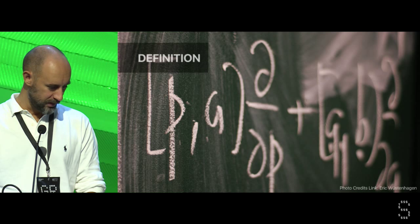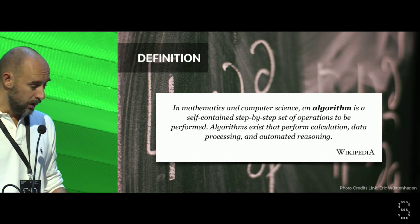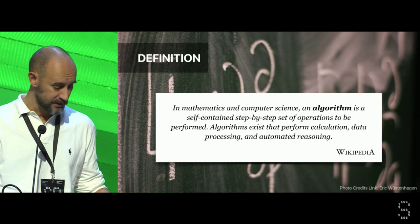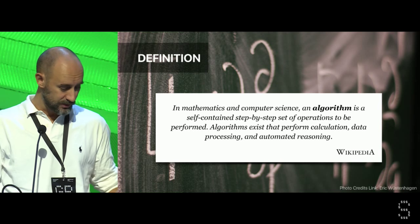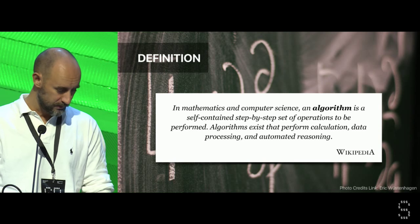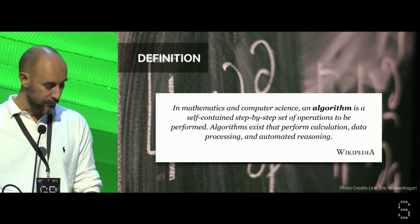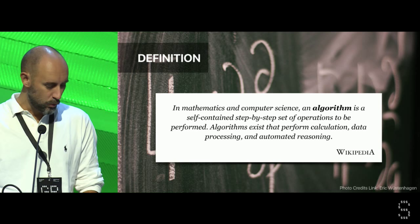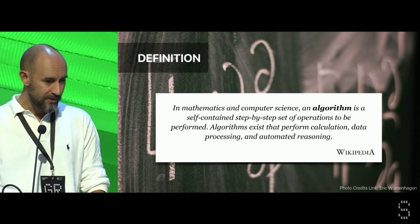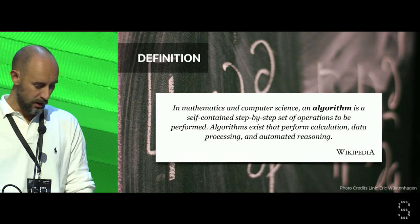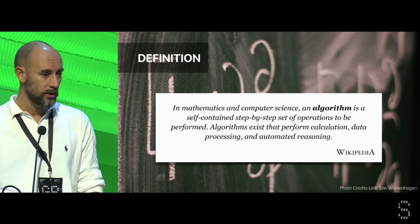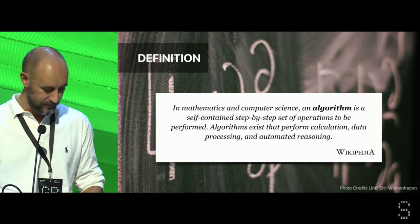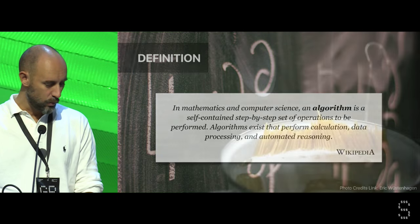Let me continue with a definition you can find on Wikipedia — a very simple definition that says: in mathematics and computer science, an algorithm is a self-contained, step-by-step set of operations to be performed. Algorithms exist that perform calculation, data processing, and automated reasoning. This is one of the definitions, because mathematicians are still trying to give a formal definition corresponding to the intuitive notion, and nowadays they do not agree with each other. So the question remains: what is an algorithm?